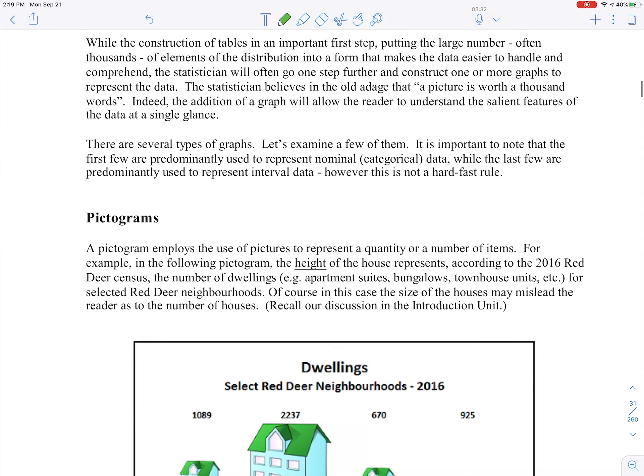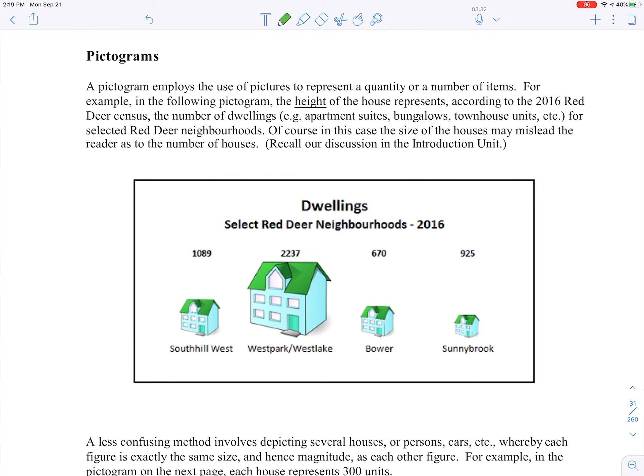Once you've constructed tables, the next thing you may want to do is describe the data using a graph, or if you're in Excel they'll call it a chart. One way you could do that is with a pictogram. We saw pictograms before back in Unit I when we were talking about how we can use graphs to deceive people, whether that is intentional or not. You remember the oil example with barrels of oil? It's the same kind of animal here.